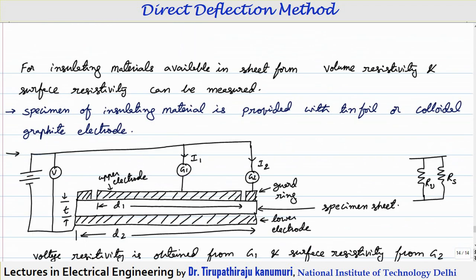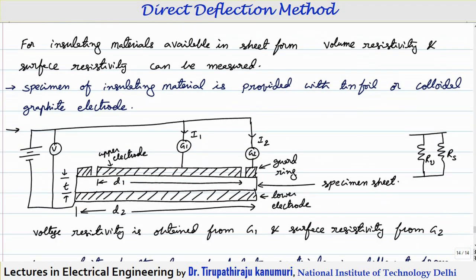For the case of insulating materials in the form of a sheet — not cables — we measure volume resistivity or surface resistivity. The specimen of the insulating material is provided with electrodes. Generally these electrodes are made using either tin foil, meaning a thin layer of tin, or colloidal graphite electrodes. A circular specimen is used, and the entire specimen is covered with an electrode on the back side — the lower side — with diameter D2.